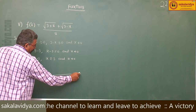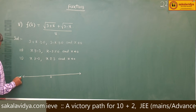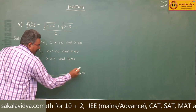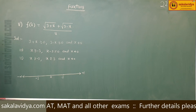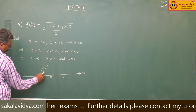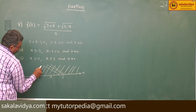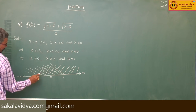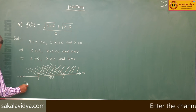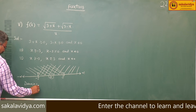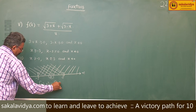Now let us draw a number line. Here 0, minus infinity. x greater than or equal to minus 3 — shade like this — and x less than or equal to 3. 0 is not included, whereas minus 3 and 3 are included. So domain is equal to closed bracket minus 3 to 0, union 0 to 3, closed bracket.